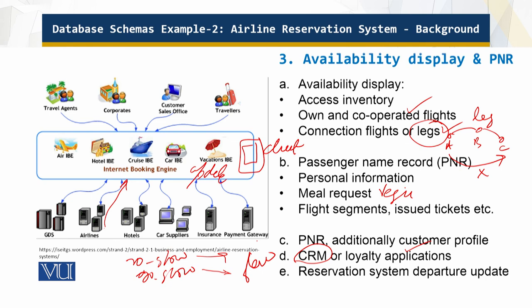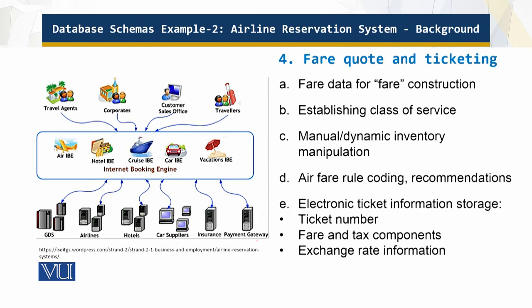For fare codes and ticketing, the fare data stores fare tariffs, rules, routing maps, class of service tables, and tax information — all used to construct the fare. The rules cover booking conditions such as minimum stay and advanced purchase requirements.